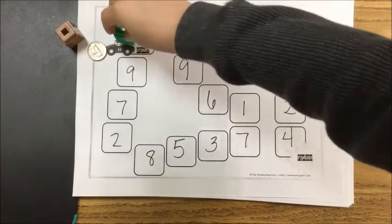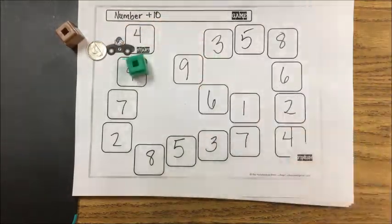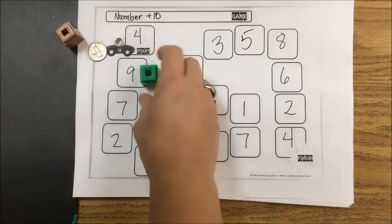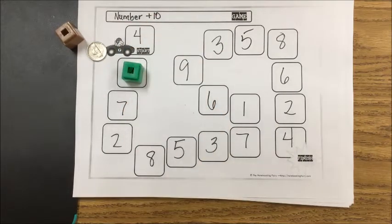Tails, you get to move two. Nineteen. So he added 10 to 9, which is 19, and he gets to stay there. If he gets it wrong, then I have to send him back to his previous spot.